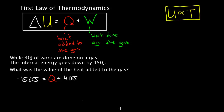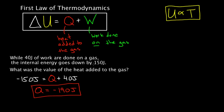Solving for Q, we subtract 40 from both sides and get negative 190 joules. This means 190 joules of heat left the system. That makes sense — 40 joules of work were added, but the internal energy went down overall, so the heat had to remove not only the 40 joules that were added, but an additional 150 to make the total energy go down. The heat taken away has to be negative 190 joules.